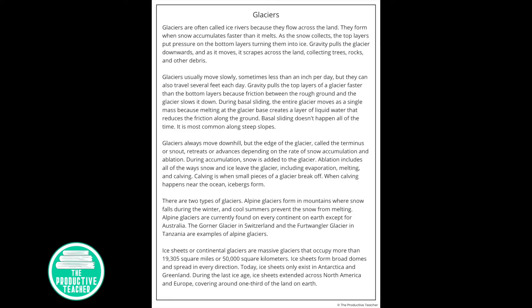The Gorner Glacier in Switzerland and the Fertwangler Glacier in Tanzania are examples of alpine glaciers. Ice sheets, or continental glaciers, are massive glaciers that occupy more than 19,305 square miles, or 50,000 square kilometers. Ice sheets form broad domes and spread in every direction. Today, ice sheets only exist in Antarctica and Greenland.